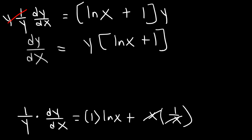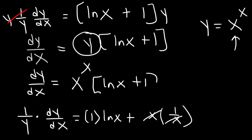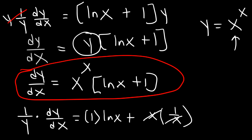Recall that we set y equal to x raised to the x, so we need to replace y with that expression. The final answer: dy/dx is equal to x raised to the x times the quantity natural log of x plus 1. That's how you use logarithmic differentiation to find the derivative of a variable raised to another variable.